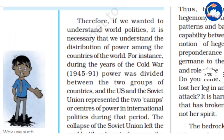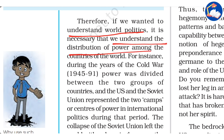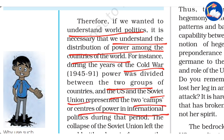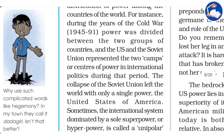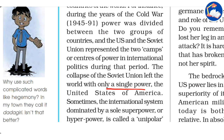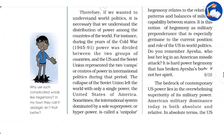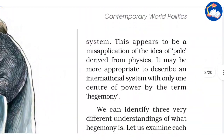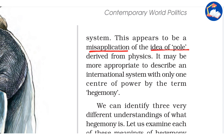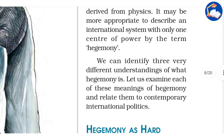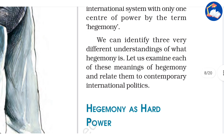To understand world politics, we must understand the distribution of power among countries. During the Cold War, power was divided between the US and the Soviet Union, representing capitalism and socialism. The collapse of the Soviet Union left the world with only a single power — the United States. An international system dominated by a sole superpower or hyper-power is called unipolar. It may be more appropriate, however, to describe such a system using the term hegemony, which refers to a single center of power. There are three very different understandings of what hegemony means.